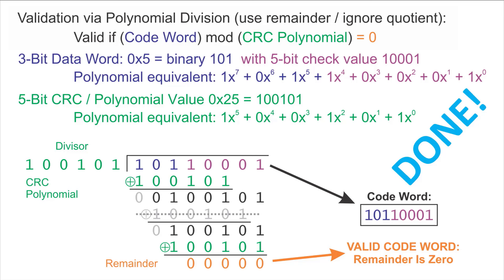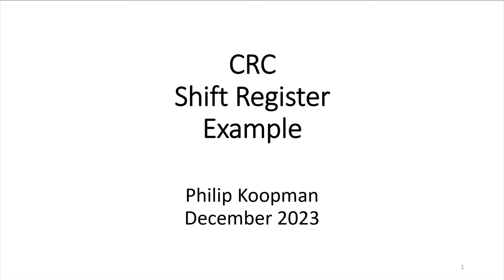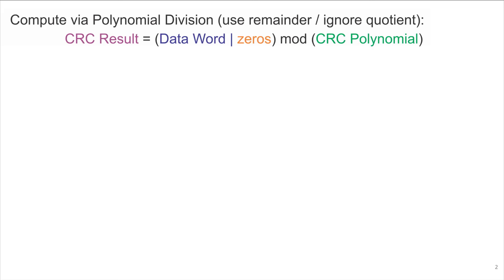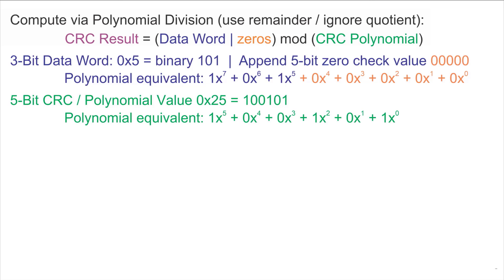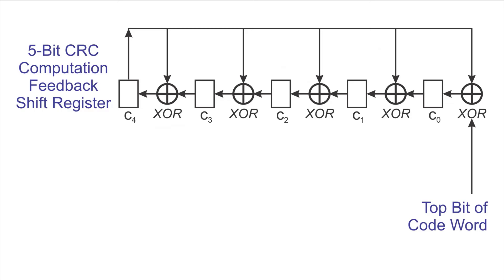And with that, we're done with validation. Now let's take a look at computing a cyclic redundancy check via a hardware shift register approach. The idea is to compute polynomial division and use the remainder as a check value. The CRC result is the data word appended with some zeros mod the CRC polynomial. For this example, we use a data word of binary 101 and append a 5-bit zero check value, giving the polynomial equivalent of x to the 7th plus x to the 5th. We use a 5-bit CRC polynomial of x to the 5th plus x squared plus 1.